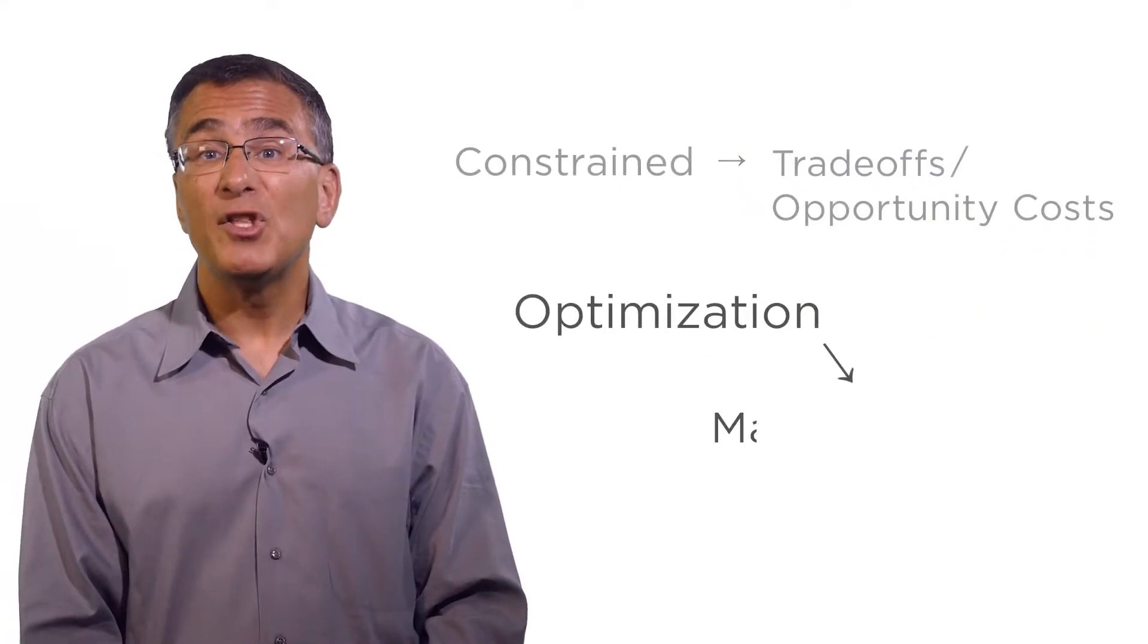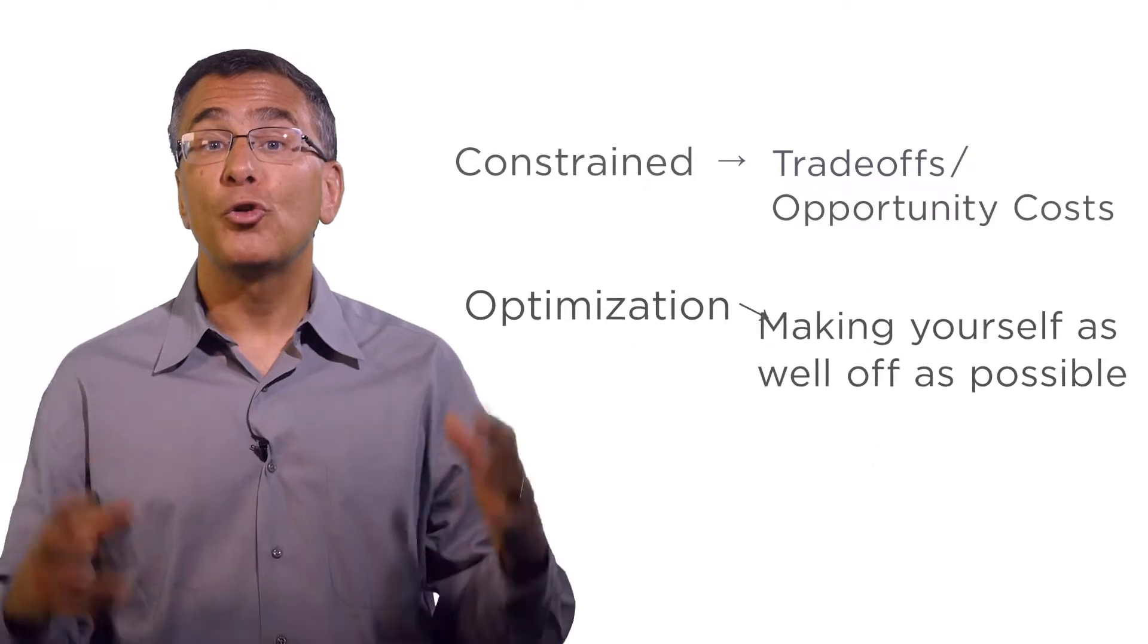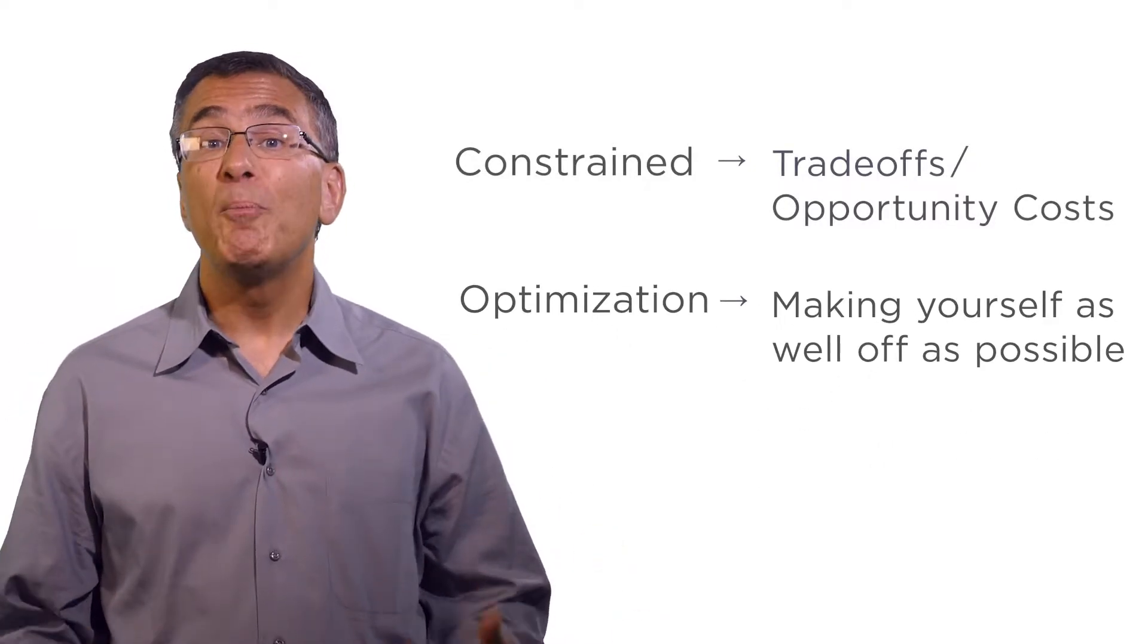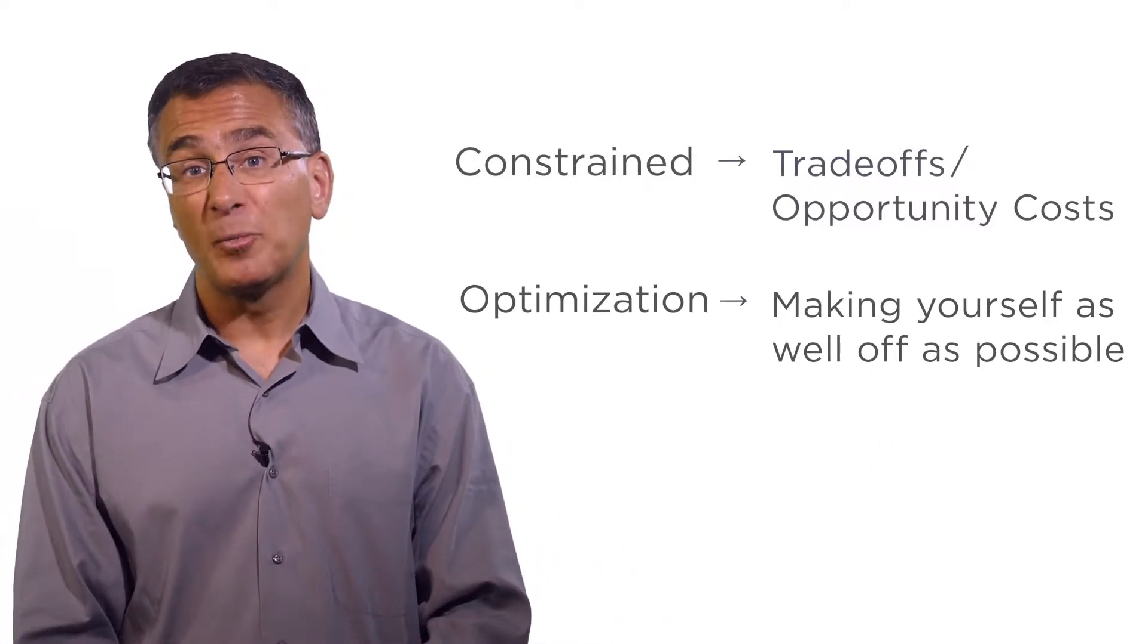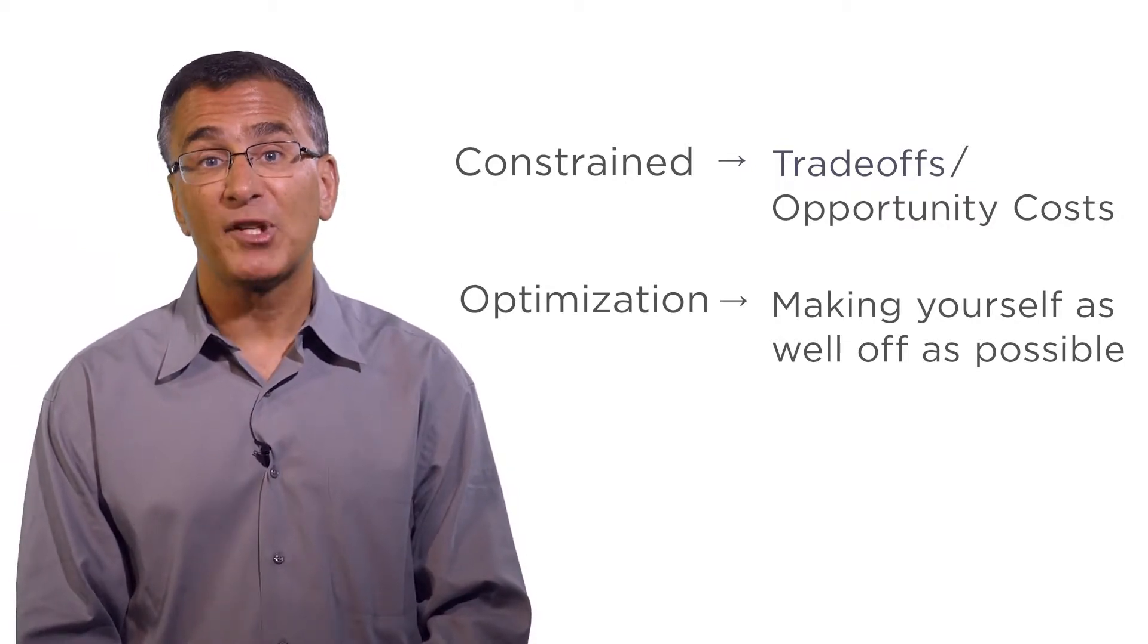Optimization means making yourself as well off as possible. So constrained optimization means making yourself as well off as possible given opportunity costs. And this is the building block for our entire economic system.